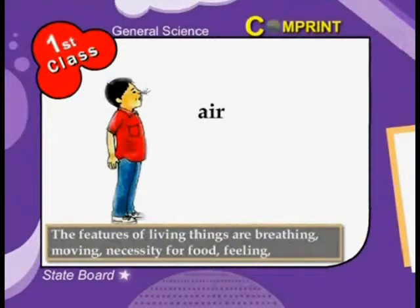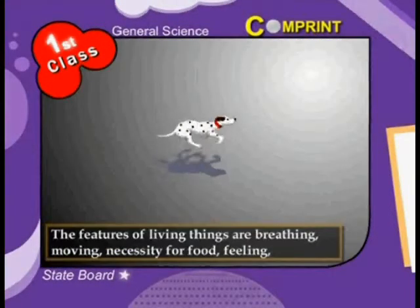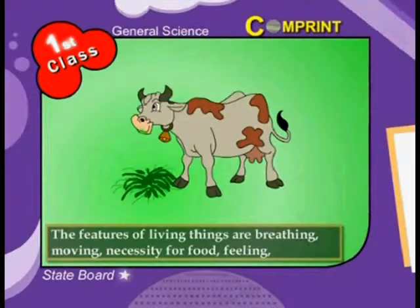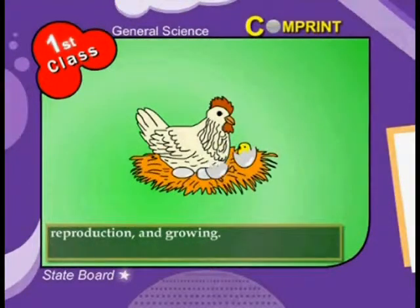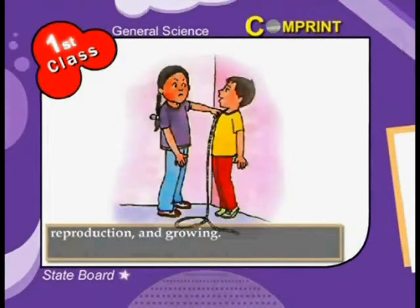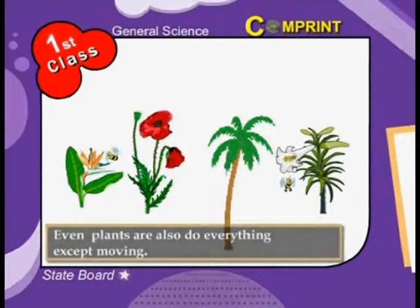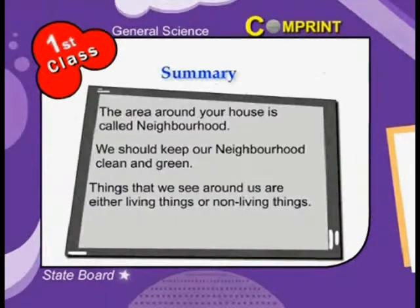The features of living things are breathing, moving, necessity for food, feeling, reproduction, and growing. Even plants also do everything except moving. Let us summarize the points.